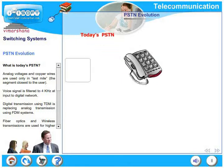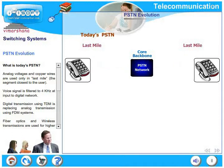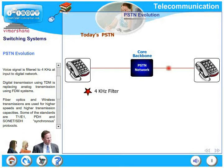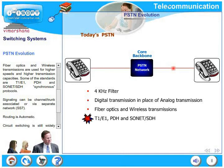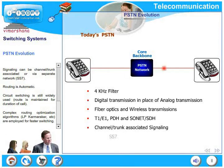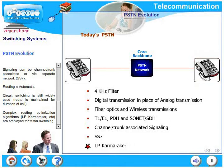In today's PSTN, analog voltages and copper wires are used only in the last mile — the segment from the user to the first pillar box on your street. Voice signal is filtered to 4 kilohertz at the input to the digital network. Digital transmission using TDM is replacing analog transmission using FDM throughout the world. Fiber optics and wireless transmissions are being used for higher speeds and capacities. Standards include T1, E1, PDH, SONET, SDH, and synchronous protocols. Signaling can be channel associated, trunk associated, or via SS7 networks. Routing is automatic, circuit switching is still widely used, and complex routing optimization algorithms such as LP and Karmarkar are being employed for faster and more efficient switching.